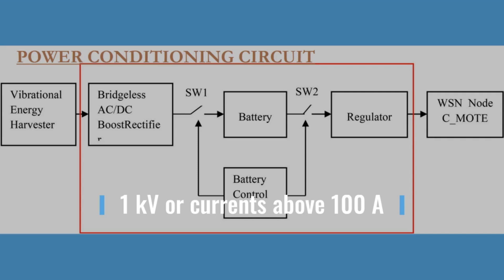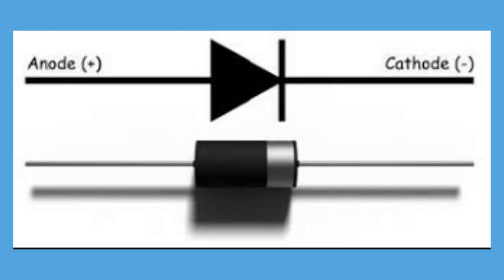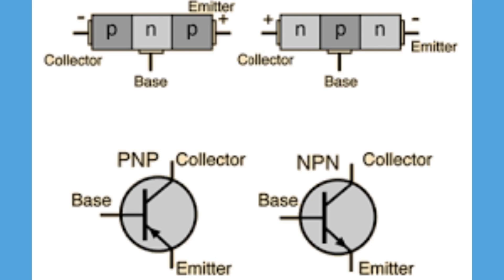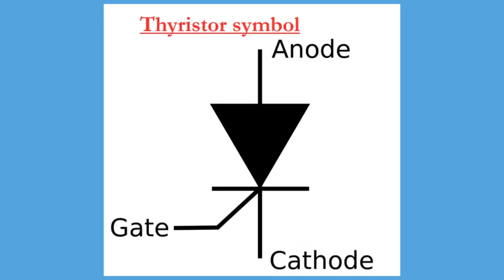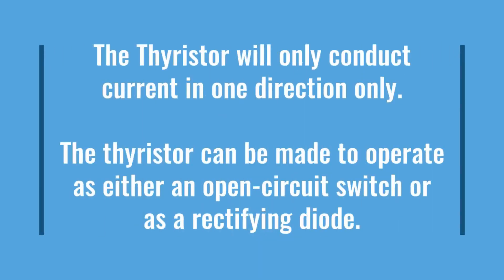For example, systems with voltages above one kilovolt or currents above 100 amperes. Unlike the junction diode — a two-layer PN semiconductor device — or the commonly used bipolar transistor, which is a three-layer switching device (PNP or NPN), the thyristor is a four-layer PNPN semiconductor device that contains three PN junctions in series, represented by its symbol. Like the diode, the thyristor is a unidirectional device — it will only conduct current in one direction.